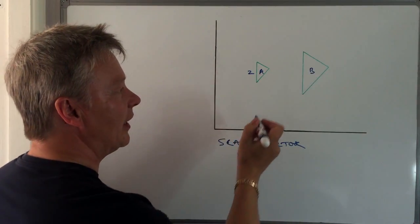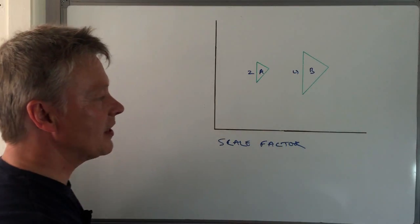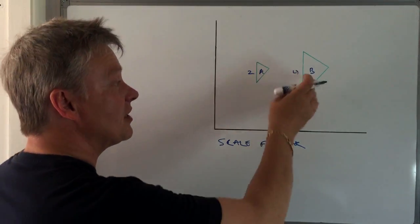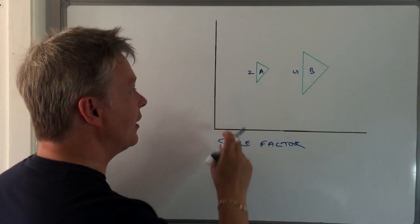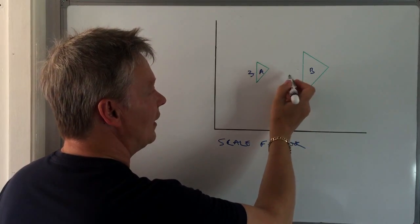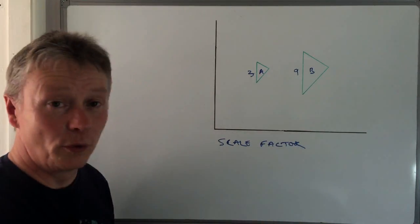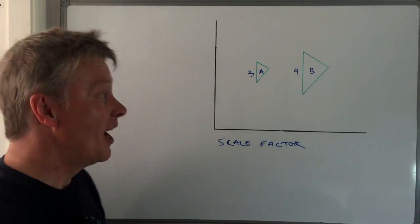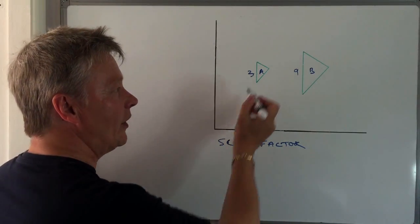So let's say if this is two units and this is four units, then there would be a scale factor of two because it's doubled in size. Likewise, let's say this is three units and this is nine units, then it would be a scale factor of three because it's tripled in size.